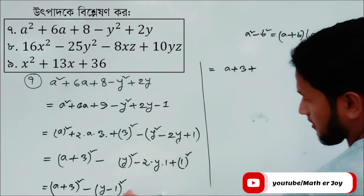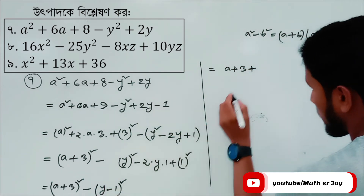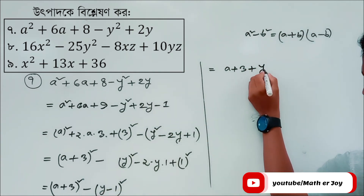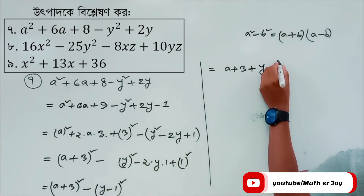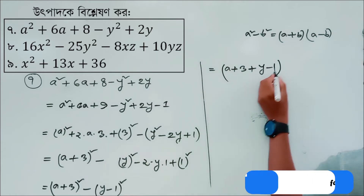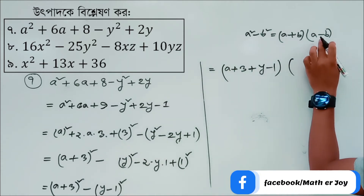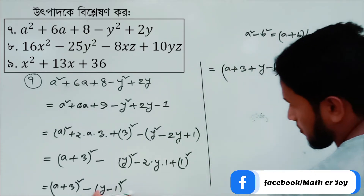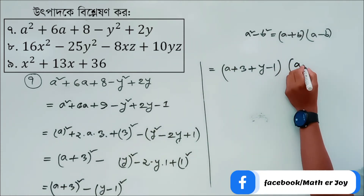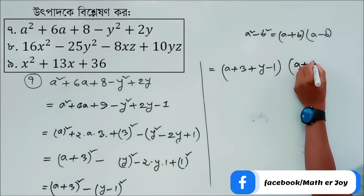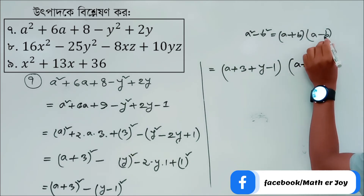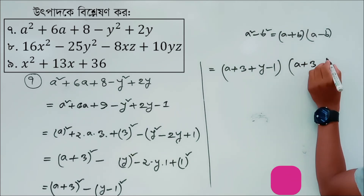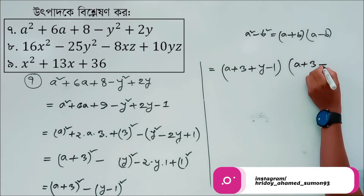a plus b into a minus b. Gujarati explanation: a plus b, a plus, minus b, then further explanation of the identity and its components.